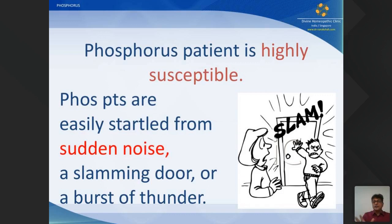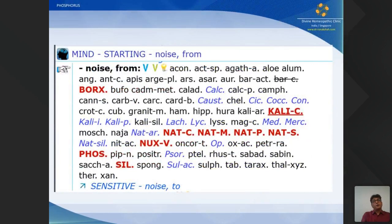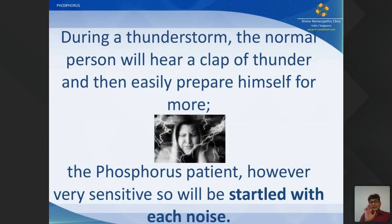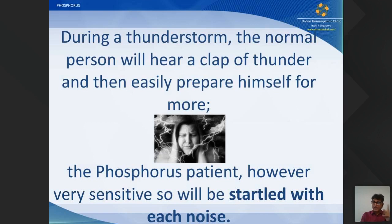Phosphorus patients are highly susceptible and easily startled by sudden noise — a slamming door or a burst of thunder. We have a rubric for this: 'starting from noise,' where phosphorus and Kali carb are among the three-mark medicines. A normal person who hears a clap of thunder will prepare themselves for the next one, but the phosphorus patient is different — they are so sensitive that they will be startled by each noise repeatedly and cannot control this response.